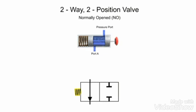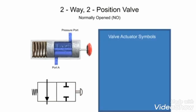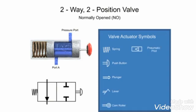Actuators used to change valve positions can be mechanical, pneumatic pilot, or electric solenoid. To complete the diagram, the primary actuator symbol is placed on the other end of the graphic symbol. In this case, the actuator is a push button. Mechanical actuators change valve positions with springs, push buttons, plungers, levers, and cam rollers. Pneumatic pilots change valve position with a pressurized air signal. Electric solenoids that change valve positions by directly moving the valve element are called direct solenoids. Electric solenoids that open small pilot valves and allow pressurized air to move the valve element are called solenoid controlled pilot operators.